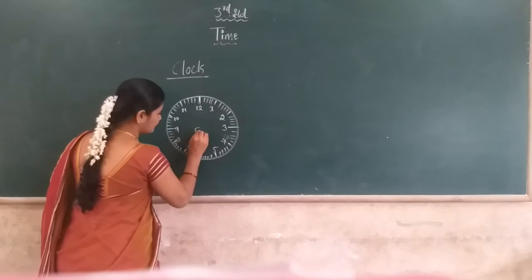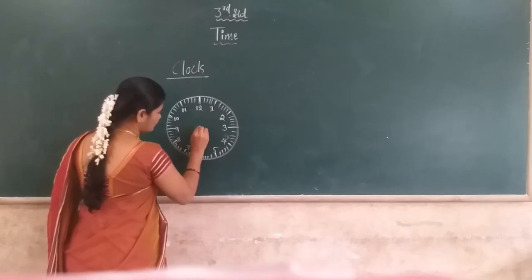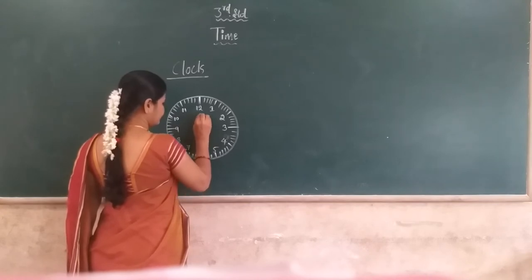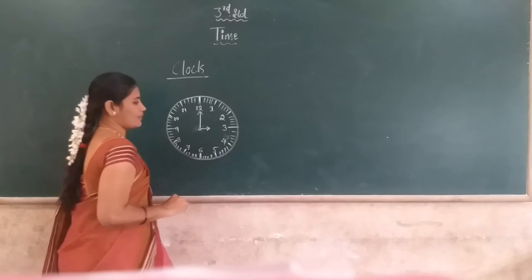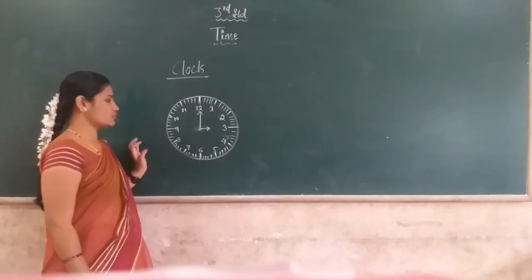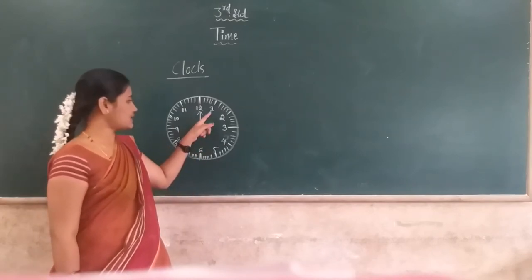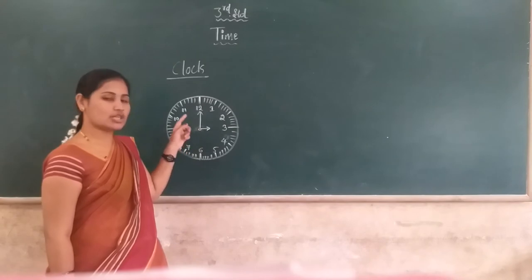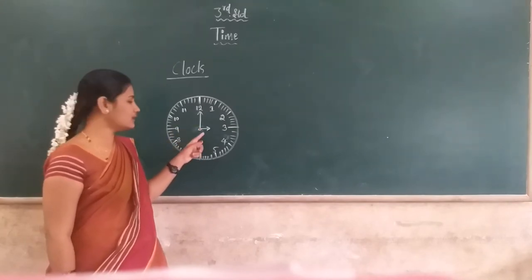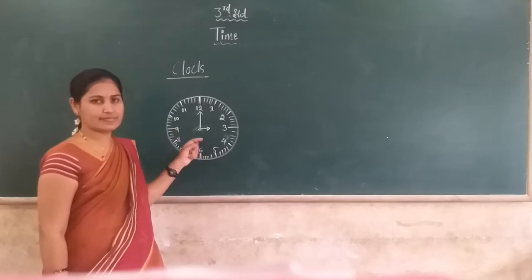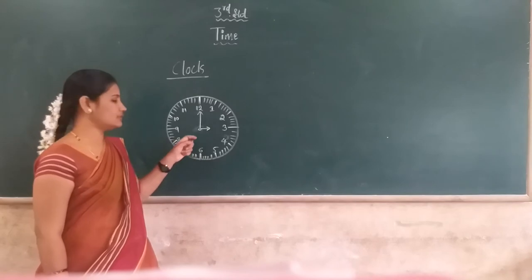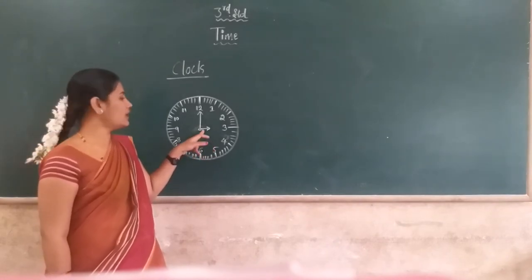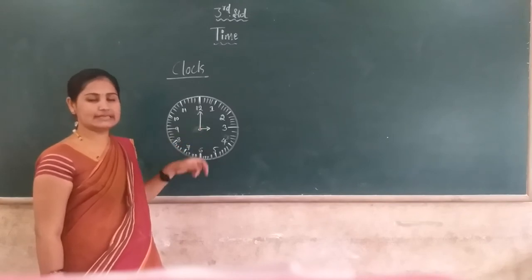Two hands are present in the clock. The face of the clock has numbers starting from 1 to 12. The clock has two needles or two hands. One is the long hand, called the minute hand. The short hand is called the hour hand. The minute hand indicates the minutes, and the hour hand indicates the hour.